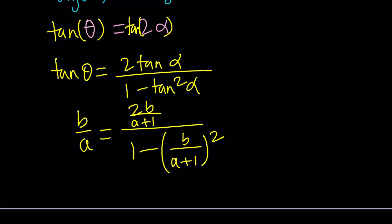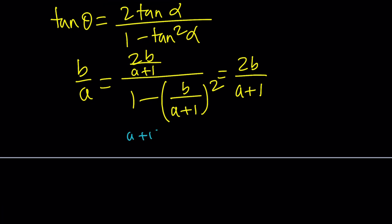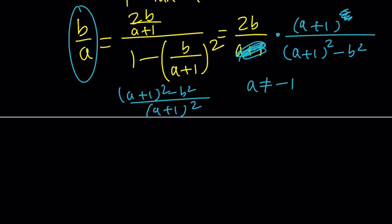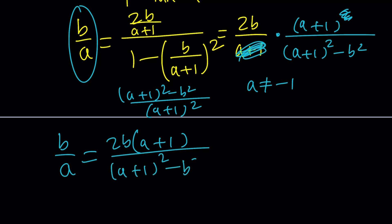Let's simplify this expression. The denominator 1 minus [B/(A+1)]² simplifies to [(A+1)² minus B²] divided by (A+1)². When we flip and multiply, we get (A+1)² divided by [(A+1)² minus B²]. Assuming A is not equal to negative 1, one of the (A+1) factors cancels, and on the left we have B/A; on the right we have 2B(A+1) divided by [(A+1)² minus B²].